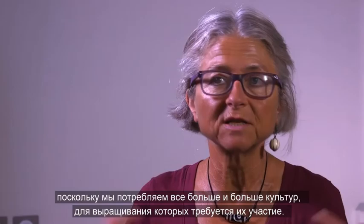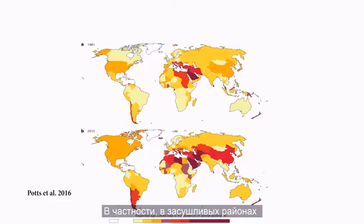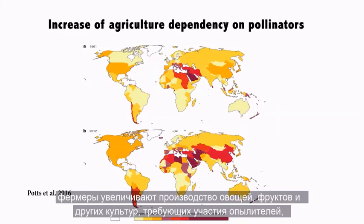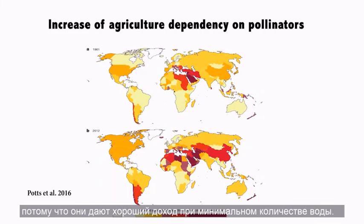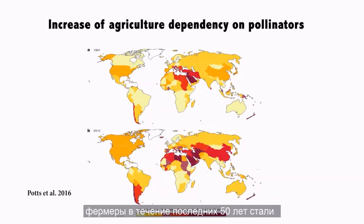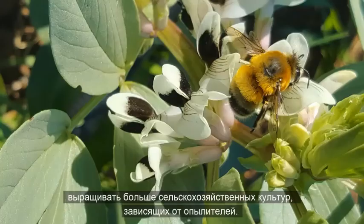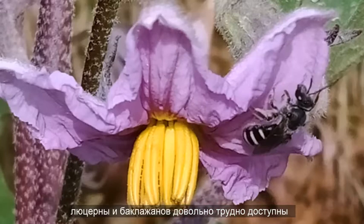Globally, agricultural dependency on pollinators has increased for many decades because we eat more and more fruits, vegetables, and spices. In particular, dry regions shift to pollinator-dependent crops because they need less water but give good income. Morocco has significantly increased the production of pollinator-dependent crops during the last 50 years. Honey bees cannot replace wild pollinators for different reasons — for instance, faba bean or eggplant have very specific flowers that honey bees can hardly access efficiently, but carpenter bees, bumble bees, or sweat bees can provide the service.